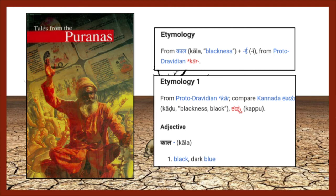The etymology of 'Kal' proves it comes from the Dravidian, not the Indo-European or Aryan languages — the Dravidians had a huge influence on Hinduism and Sanskrit. The word 'kala' in Sanskrit, meaning blackness, derives from Proto-Dravidian 'kar' — K-A-R — which is very important because we'll be aligning it with other cultures shortly. Below that, 'kala' means black or dark blue. Keep that K-A-R root in mind.